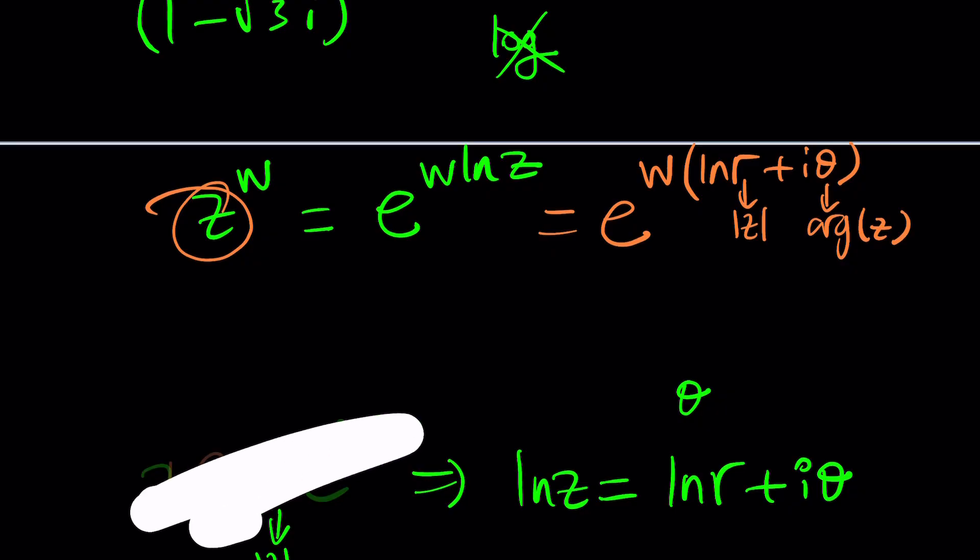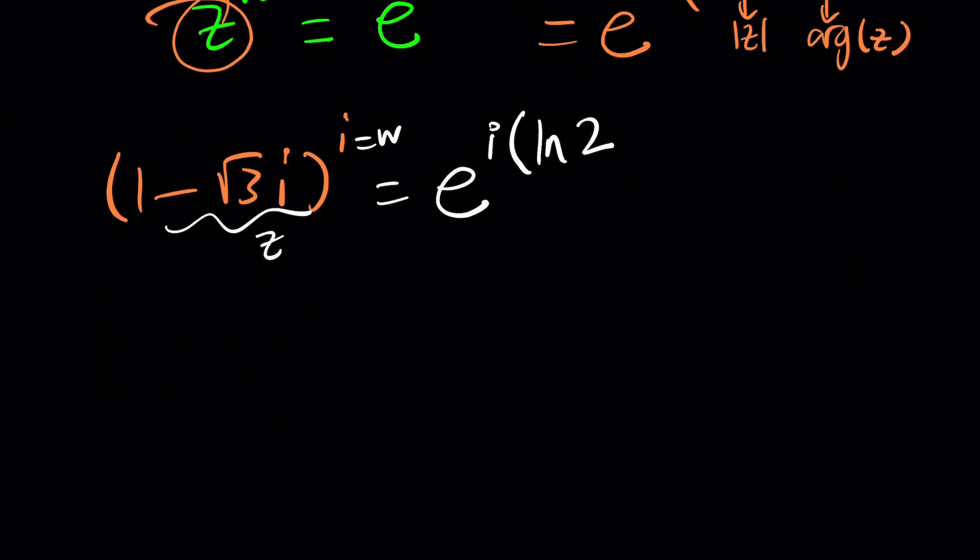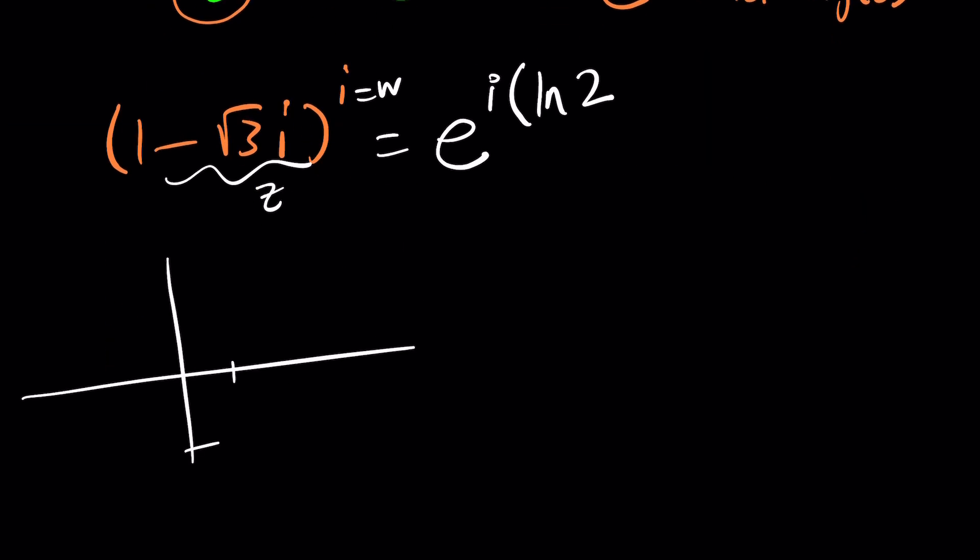Okay let's go ahead and try to apply this to our problem. So we have 1 minus root 3i to the power i so z is 1 minus root 3i and our w is i. Great so this should give us e to the power w which is i multiply by ln r. What's the absolute value of z? You probably know that it's 2 because if you think about the 30 60 90 triangle that's what it is. Or you can plot it, 1 minus root 3i is going to be in the fourth quadrant and it's going to make a 60 degree angle but it's negative 60 degrees. So it's basically going to be i times negative pi over 3.